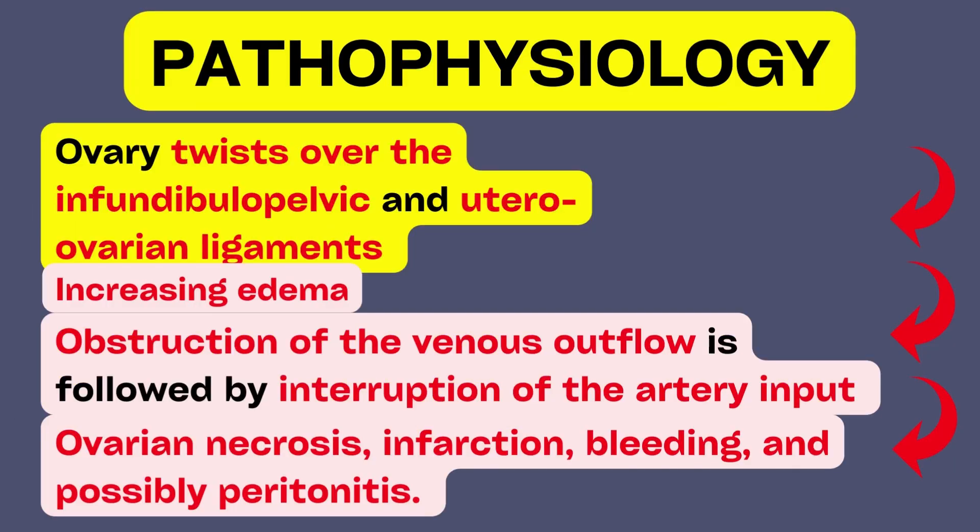Let us understand the pathophysiology. Remember the infundibulopelvic and utero-ovarian ligaments, which serve as the ovary's supporting ligaments and the blood supply to the ovary. When the ovary twists over them, these ligaments are torn, causing swelling and blood flow restriction.